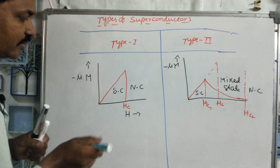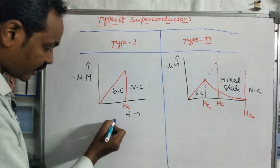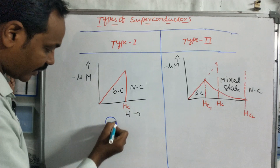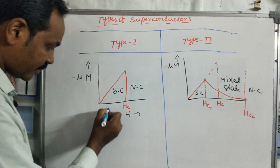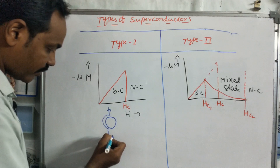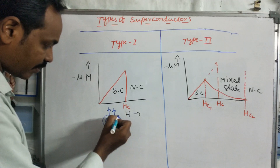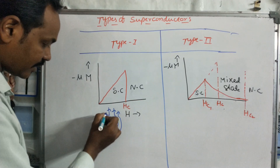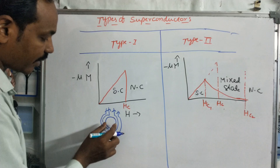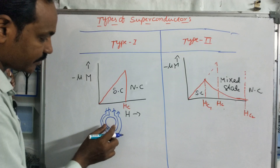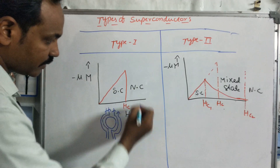Now let's talk about the magnetic effect on superconducting material. The magnetic flux lines are repelled by the superconducting material. So the superconducting material acts as a perfect diamagnetic material, repelling all magnetic flux lines.